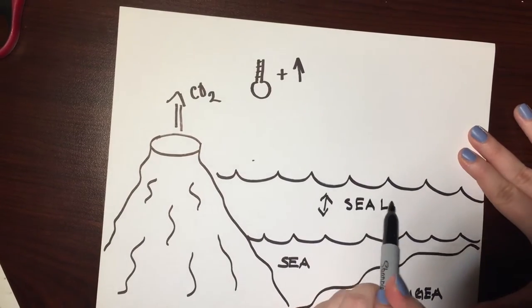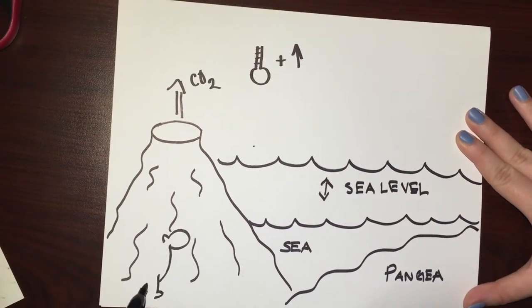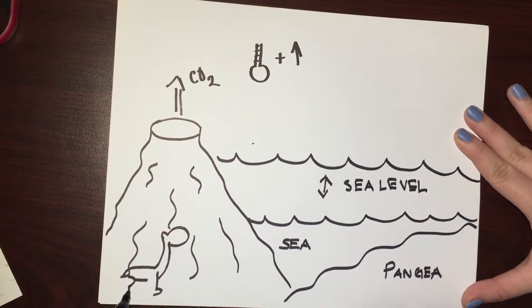Possible causes of the mass extinction are results from the release of carbon dioxide from widespread volcanic activity associated with the rifting of Pangaea.